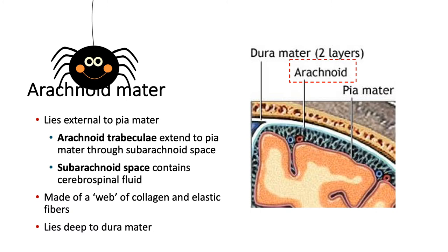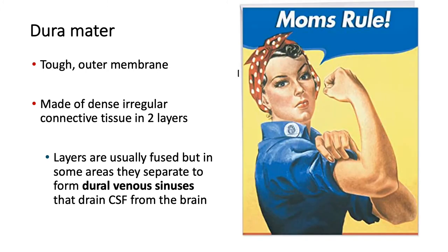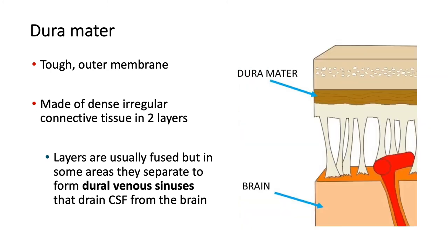Finally, we have the dura mater — dura meaning hard or tough. So we had the inner layer, the tender mother, but now we have the tough mother in translation. The dura mater forms this tough outer membrane and it's made of dense irregular connective tissue. It usually consists of two layers, but these are often fused. In some areas they separate to give a cavity, and that's what forms the dural venous sinuses, which helps drain excess CSF from the brain.